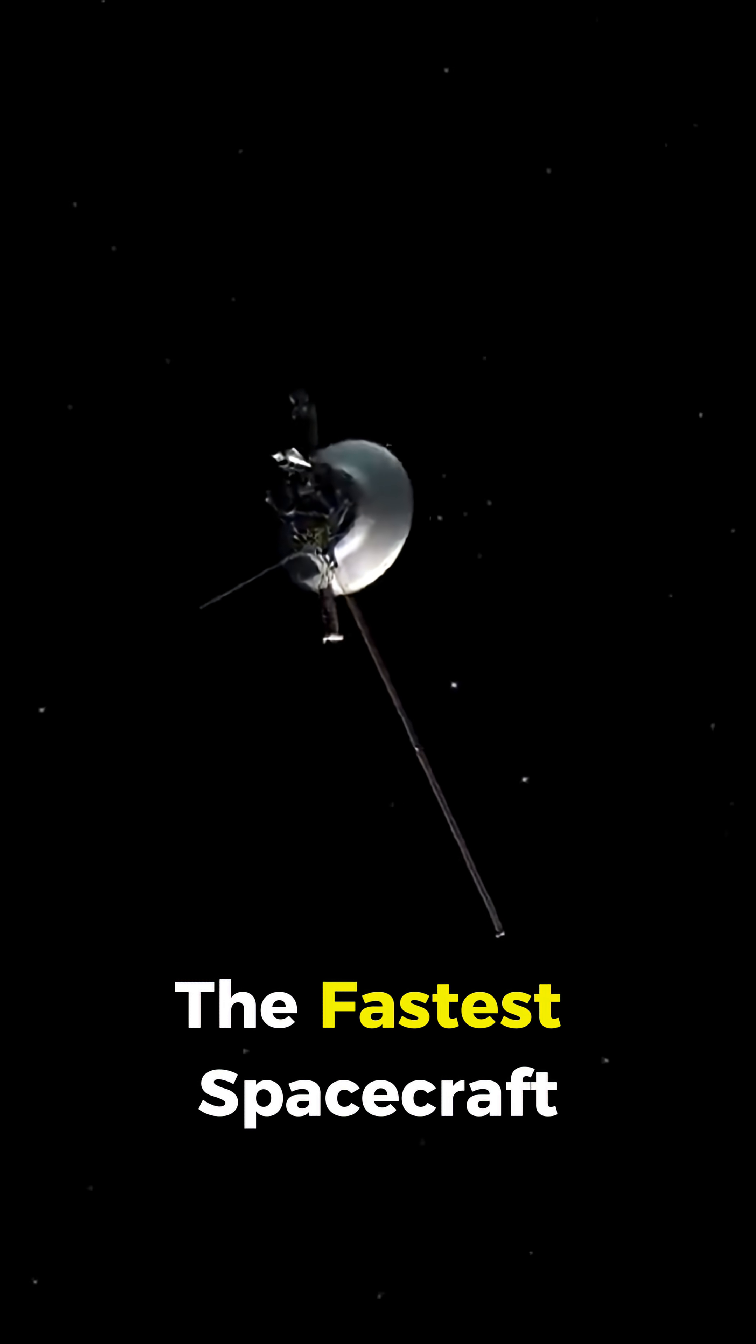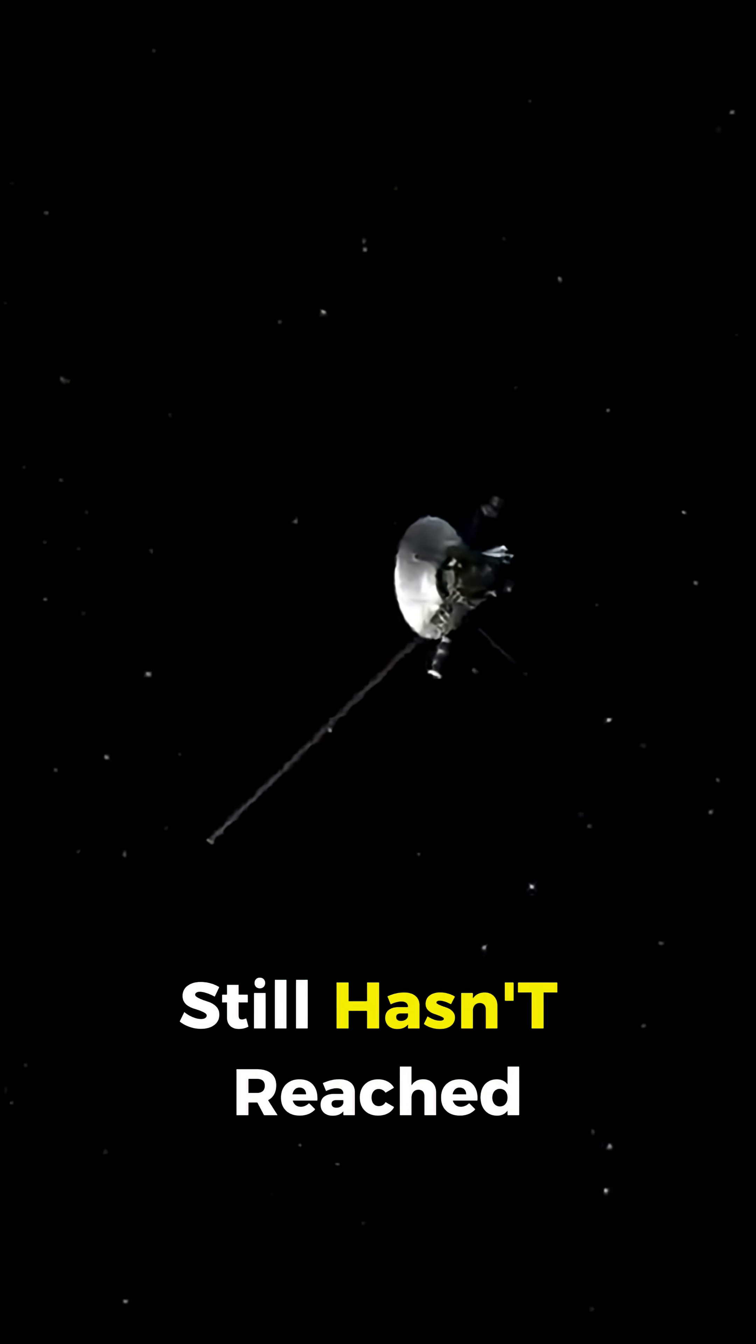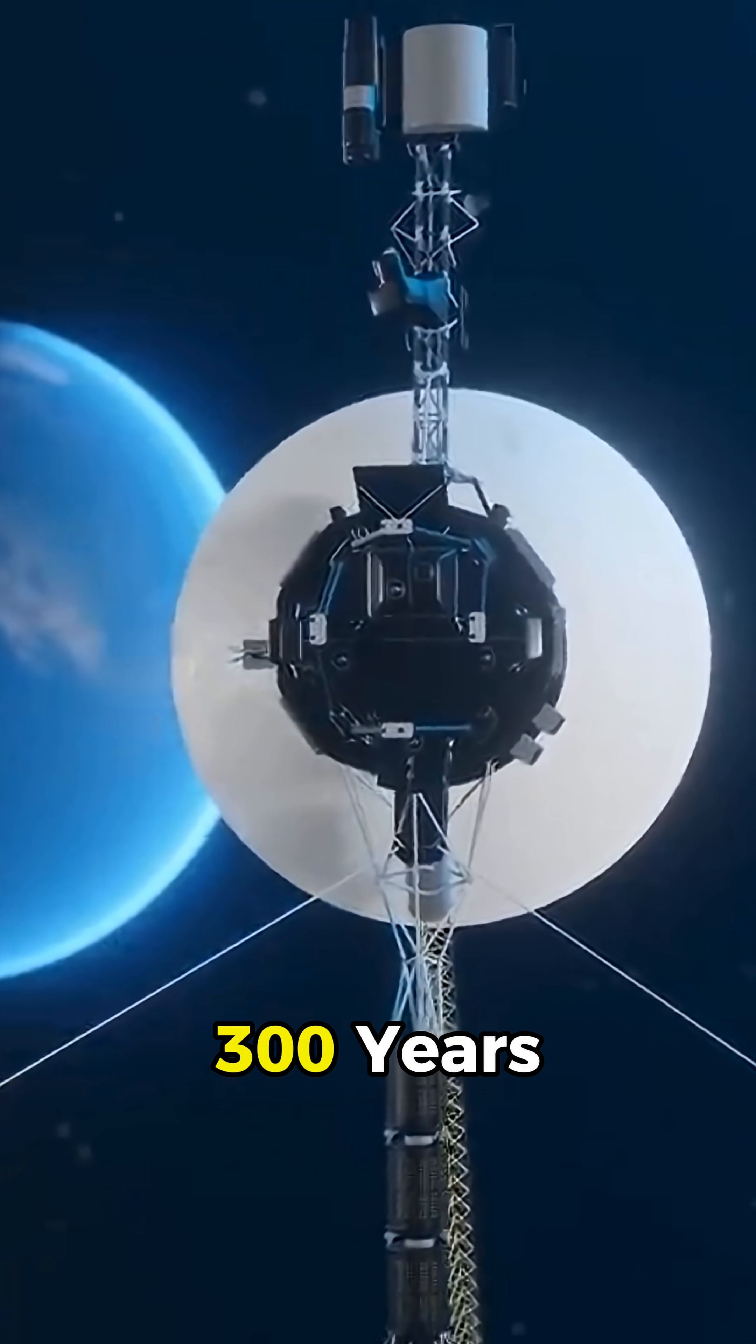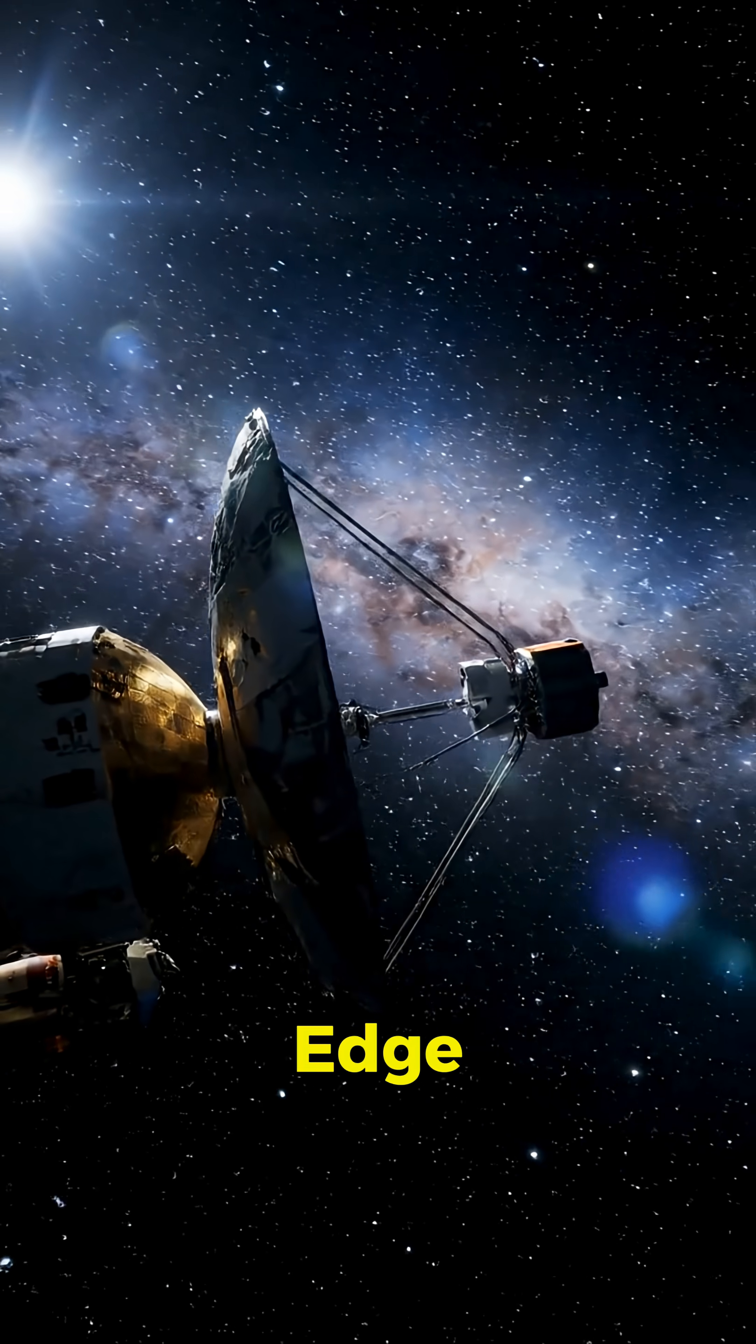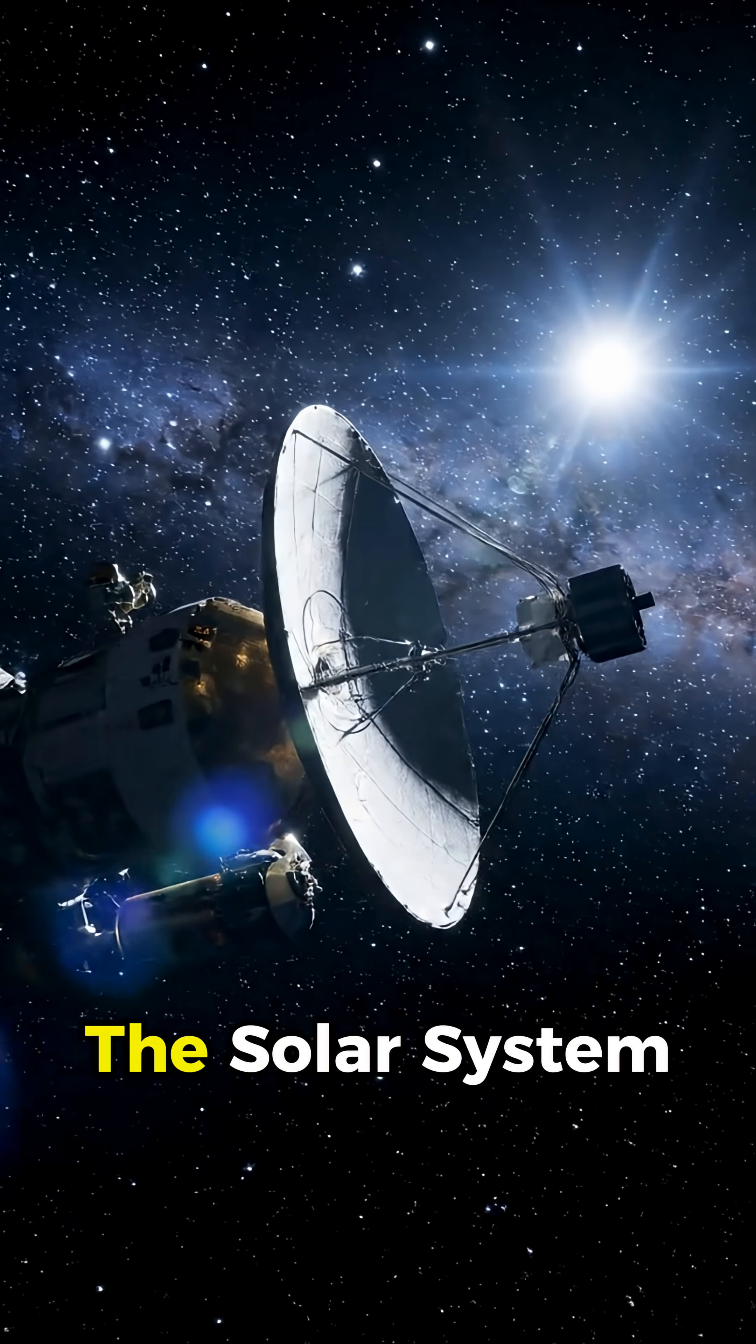Voyager 1, the fastest spacecraft humans have ever sent into space, still hasn't reached the Oort Cloud. At its current speed, it would need more than 300 years just to get to the inner edge and over 30,000 years to completely leave the solar system.